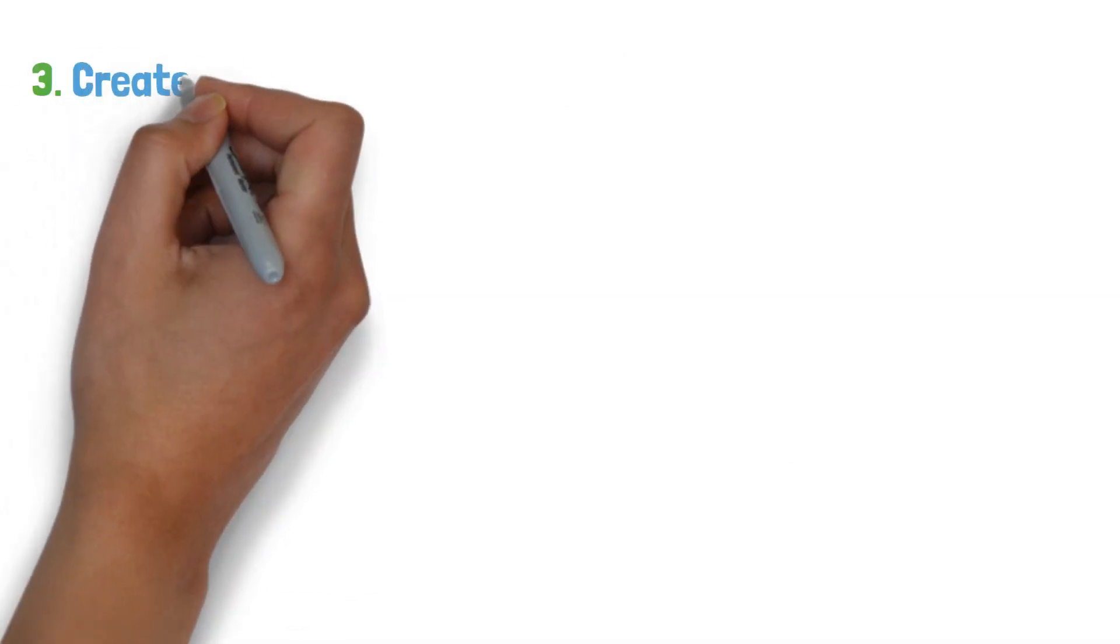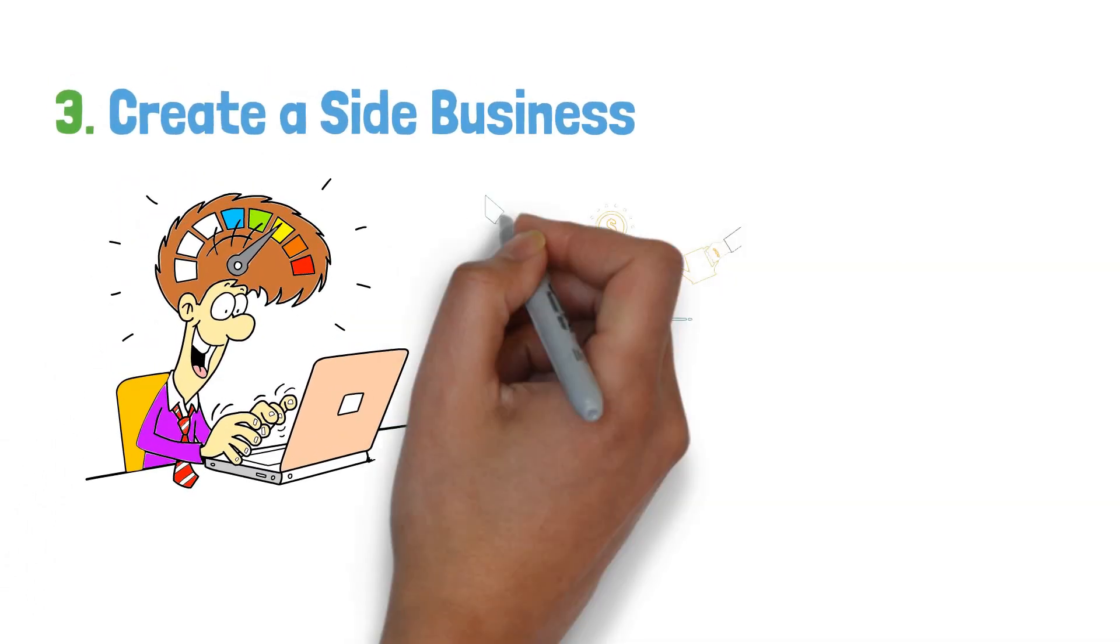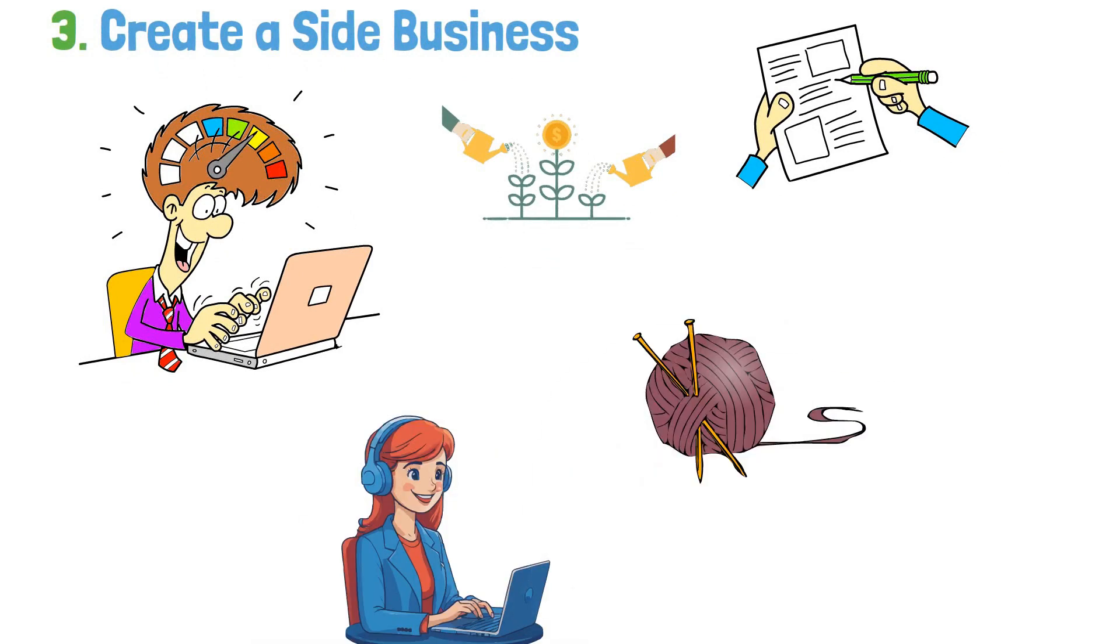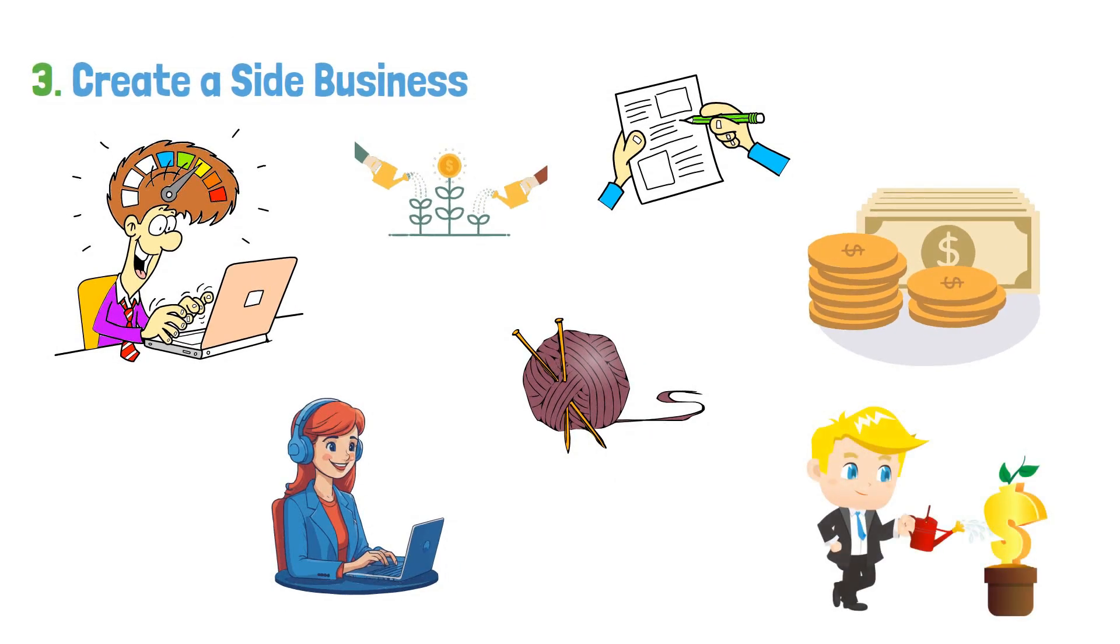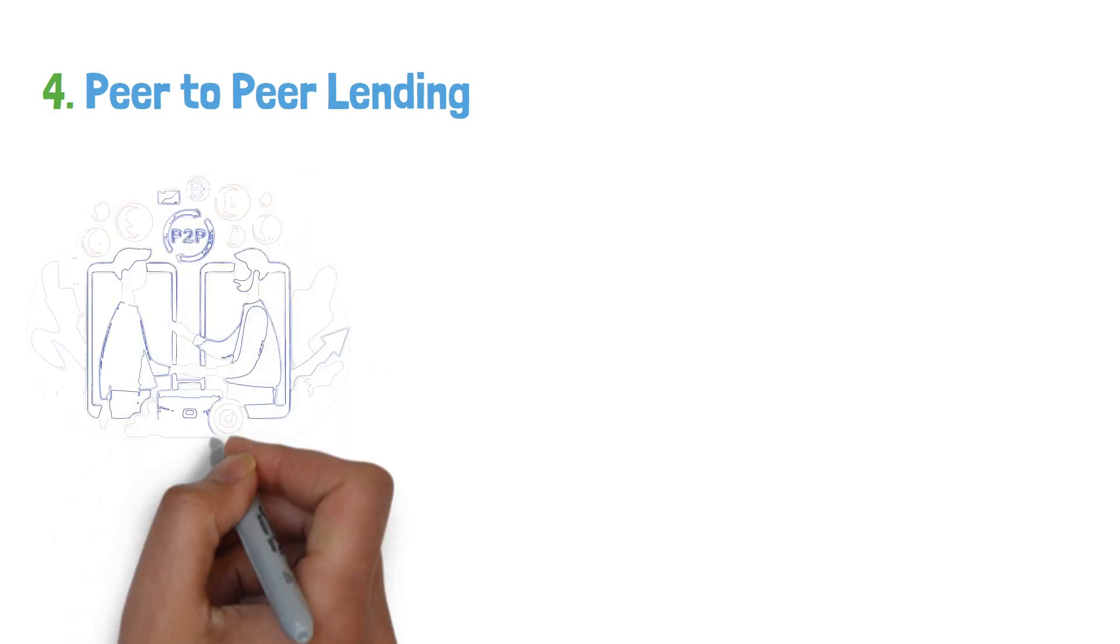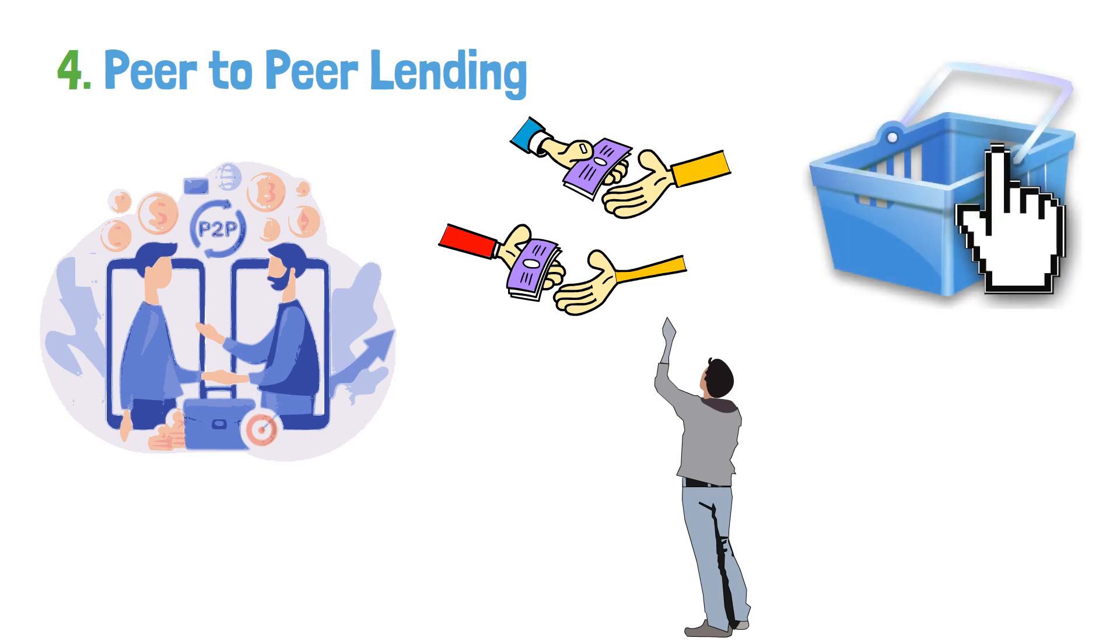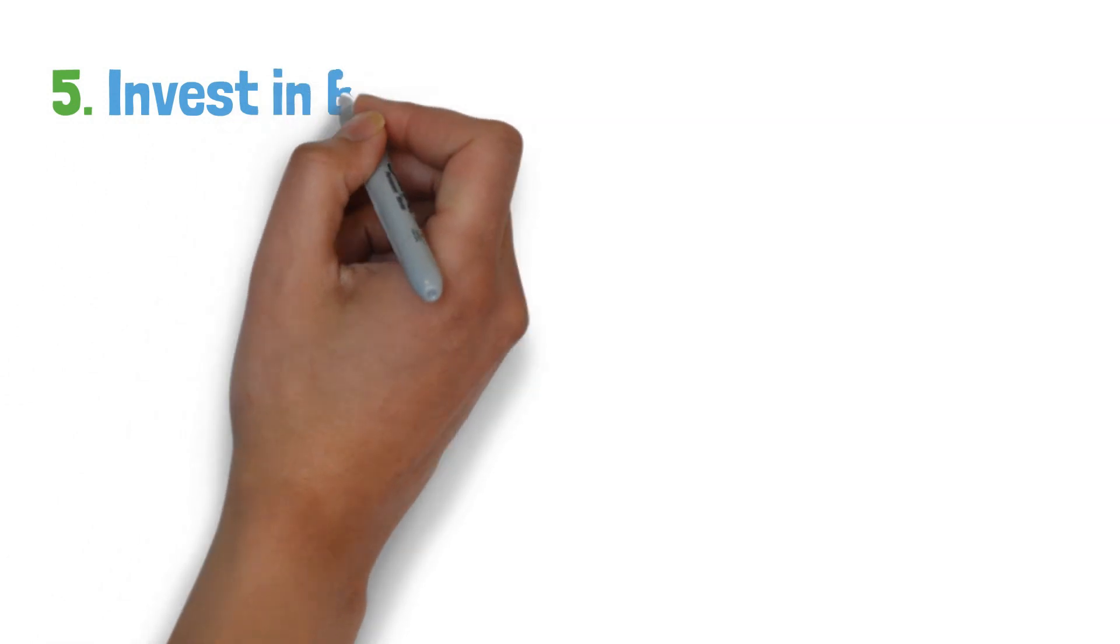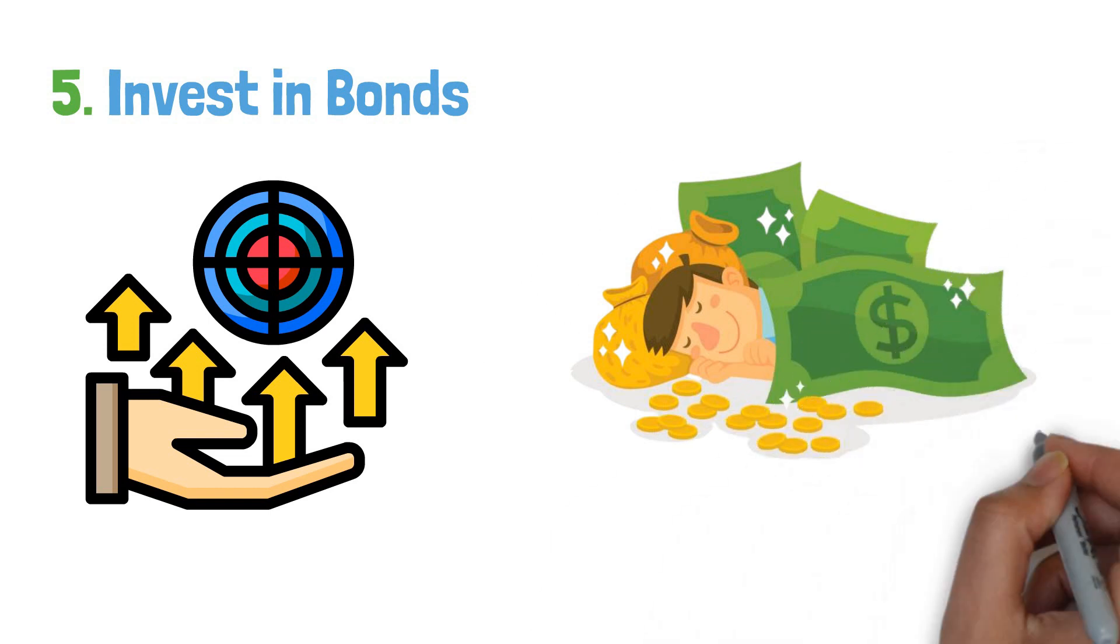Number three, create a side business. If you have a passion or a skill that could be turned into a business, consider starting a side hustle. Whether it's freelance writing, graphic design, or selling handmade crafts, a side business can provide extra income and even become a full-time venture. Number four, peer-to-peer lending. Another option is peer-to-peer lending, where you can lend money to individuals or small businesses online in return for interest payments. Number five, invest in bonds. Bonds are another investment option providing a steady income stream through interest payments.